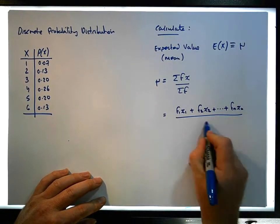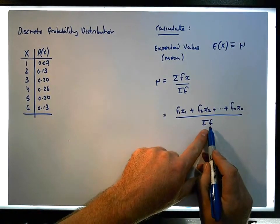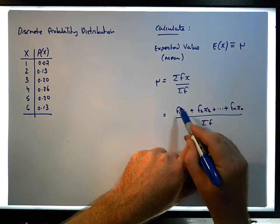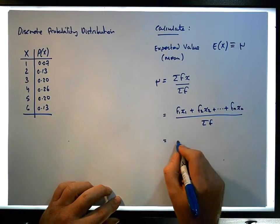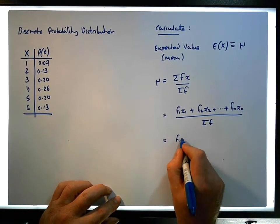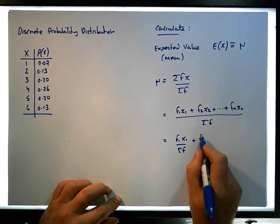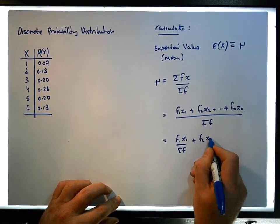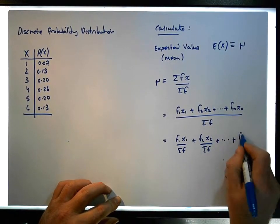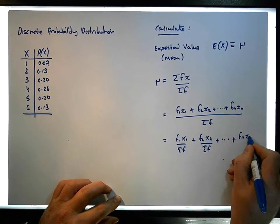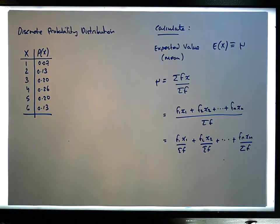All divided by the sum of the frequencies — this is the common denominator across the summation. We can break this up so it becomes f₁·x₁ over the sum of the frequencies, plus f₂·x₂ over the sum of the frequencies, all the way to fₙ·xₙ over the sum of the frequencies.